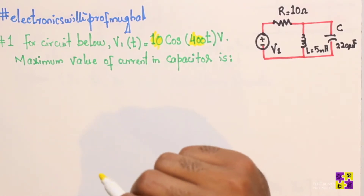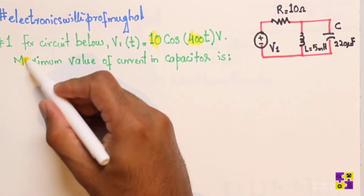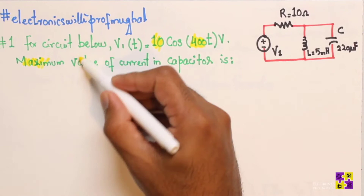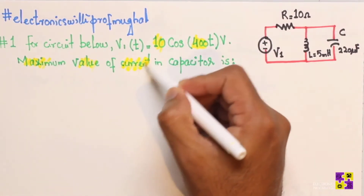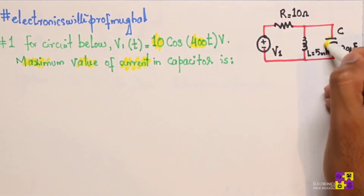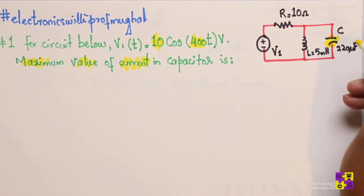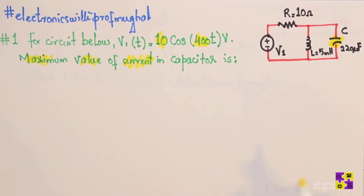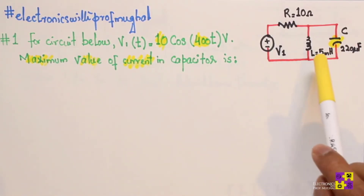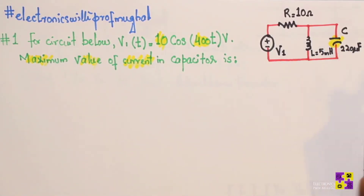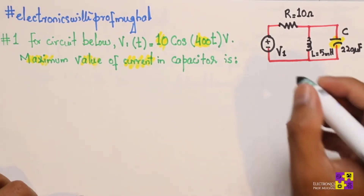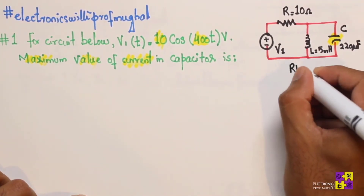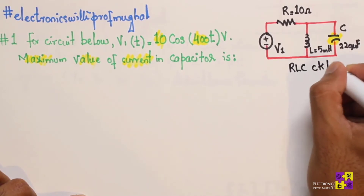We have to find out the maximum value of the current in the capacitor — the current across this capacitor. Before we can proceed, notice we have a resistor, inductor, and capacitor. This is an RLC circuit.